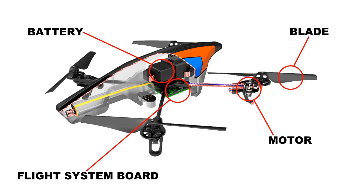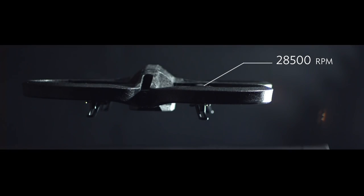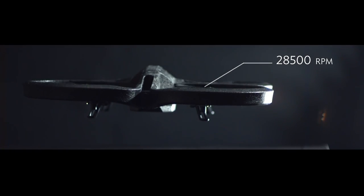But how do drones fly? Apart from the electronic flight system, a drone also needs a battery, motors, and propellers, commonly called blades. The motors rotate the blades at high speed. The Parrot AR drone, for example, can rotate its blades at over 28,000 revolutions per minute, or 475 revolutions per second.